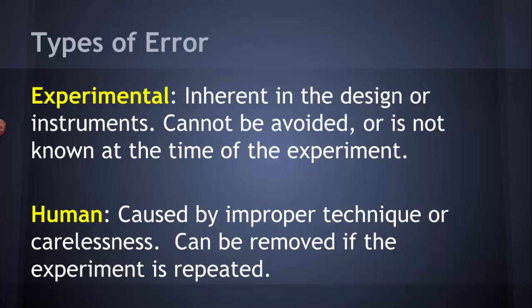We're only going to be interested in experimental errors. Experimental errors are the errors that cannot be helped. Either the instruments aren't good enough or there's something in the design of the experiment that doesn't allow them to go away.